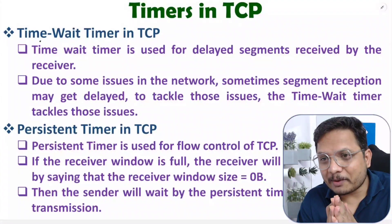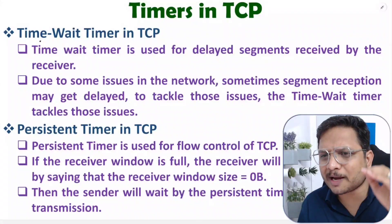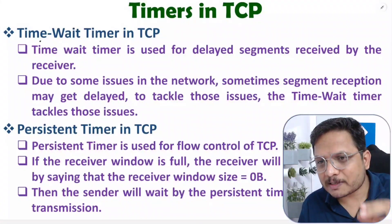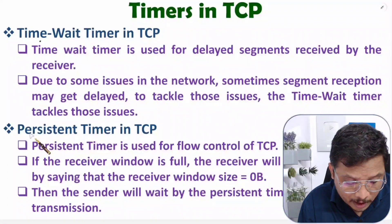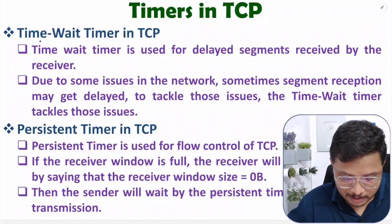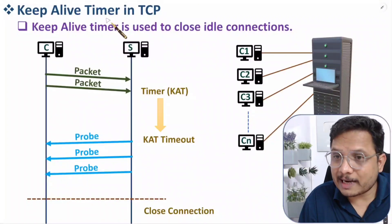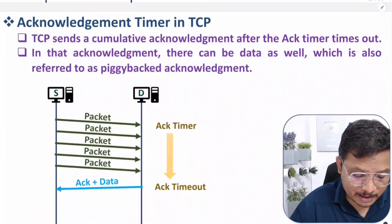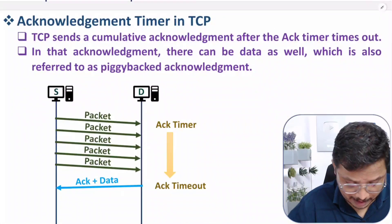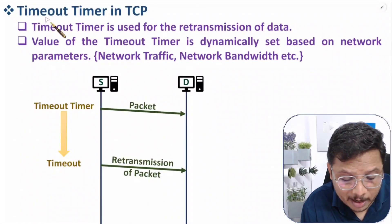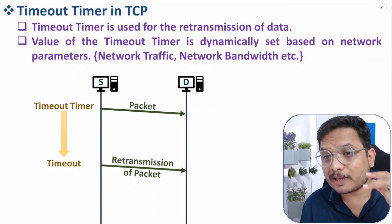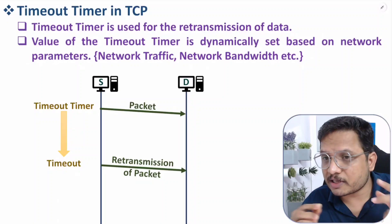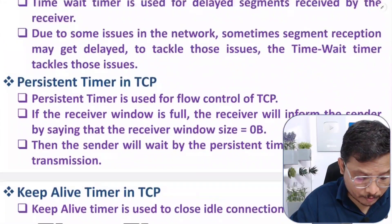Hello friends, welcome to Engineering Funda. In this video I'm going to explain the varieties of timers in TCP. I'll cover five timers: the time-wait timer, the persistent timer, the keep-alive timer, the acknowledgement timer, and the timeout timer — all explained with practical examples to give you clarity on how each timer functions in TCP.